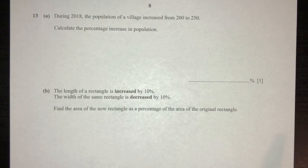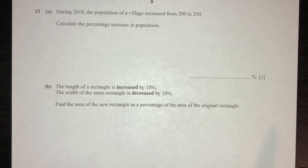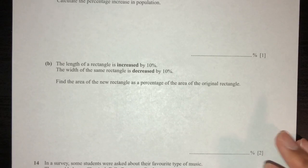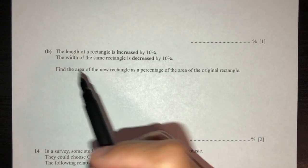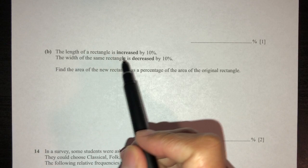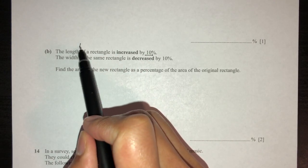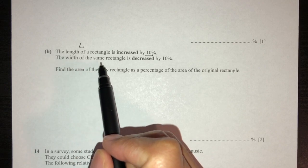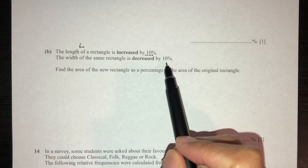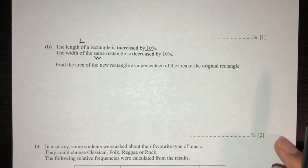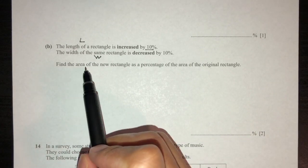Hello guys, welcome to another video. This one is a request video for Part B of Question 13, Paper May/June 2020, Paper 11. The question states: the length of a rectangle is increased by 10 percent, and the width of the same rectangle is decreased by 10 percent.